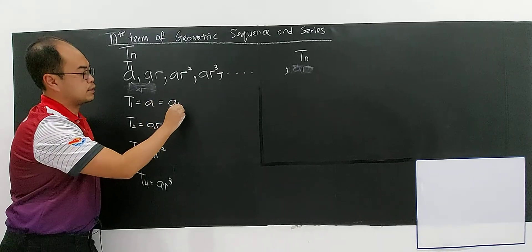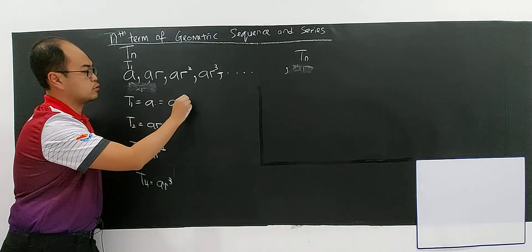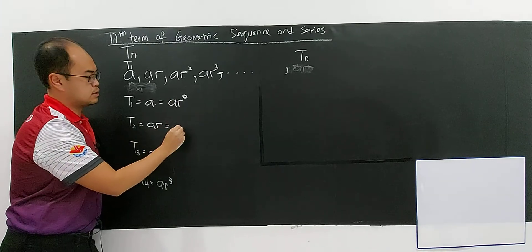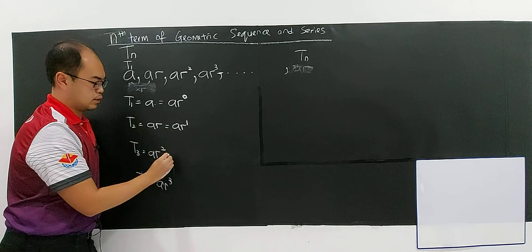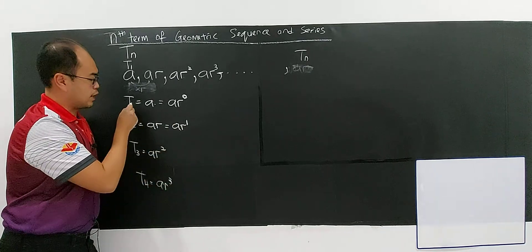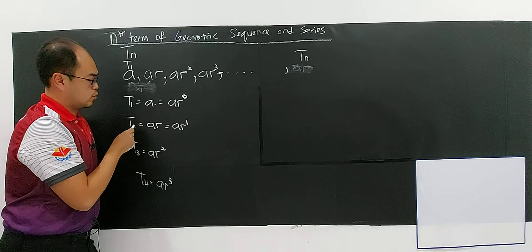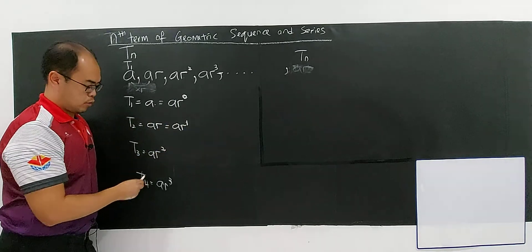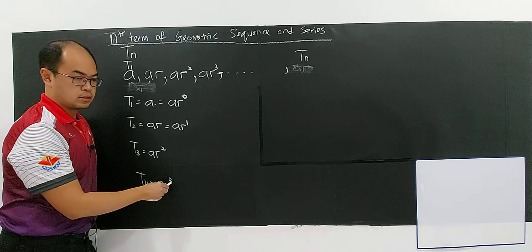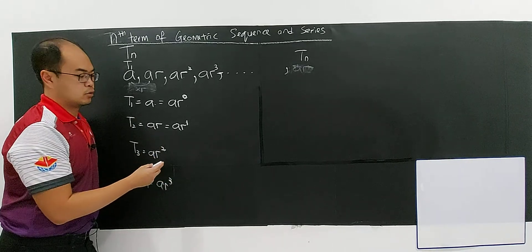So you can see that this is AR to the power of 0. This is AR to the power of 1. This is 2. This is 3. So when there is 1 here, it's 0. When 2 here is 1. When 3 here is 2. When 4 here is 3. So it's less by 1.